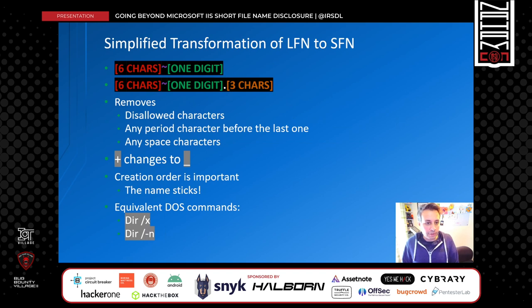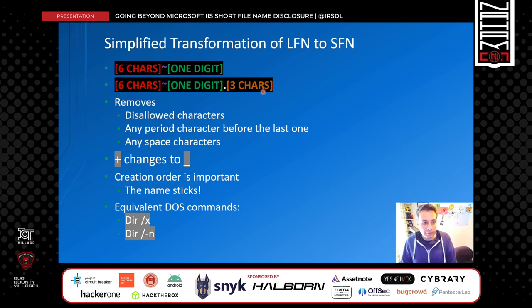In order to create short file names for incompatible file names, Windows follows certain rules. Short names normally start with the first 6 characters of the real file name, followed by a tilde character, followed by a number. If there is an extension, it uses a dot followed by the first 3 characters of the file extension. It also removes disallowed characters, additional dots, or spaces, and changes the plus sign to underscore. If a short name equivalent already exists for another file, it increases the number after the tilde. You can run two commands in the command prompt to get the created short file names.